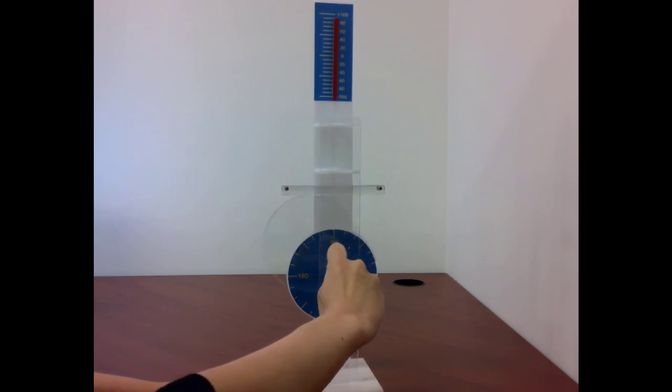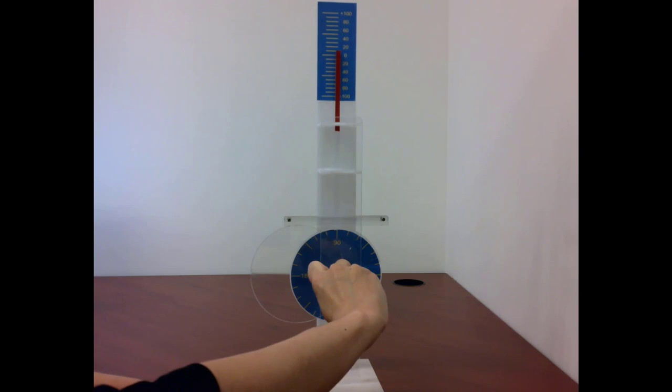And then as we turn to 180 degrees, you can tell and see that the height of the rod is at zero again, and then all the way back down when the cam is at its lowest point.